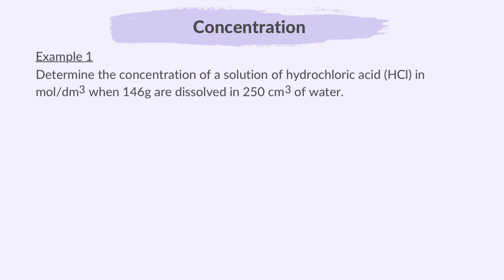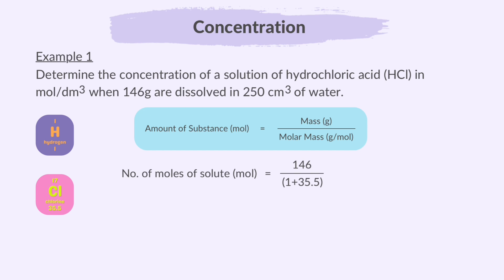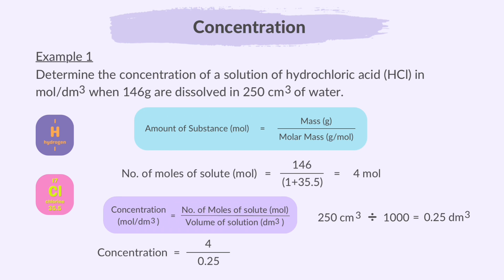Let's do an example. Determine the concentration of a solution of hydrochloric acid in mole per dm cubed when 146 grams are dissolved in 250 cubic centimeters of water. So, first we find the number of moles by dividing 146 grams by 1 plus 35.5, which are the relative atomic masses of hydrogen and chlorine. That gives us 4 moles. Now, we convert the volume of water from cubic centimeters to cubic decimeters by dividing by 1000. Then, we substitute the number of moles and volume into the concentration formula. 4 divided by 0.25 gives a concentration of 16 mole per dm cubed.